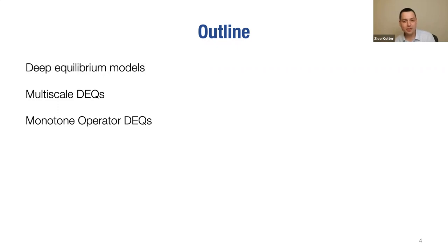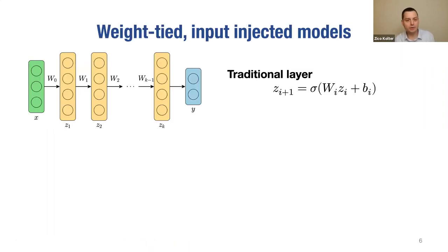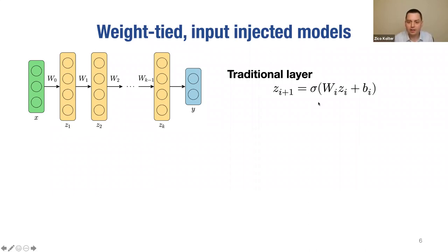To derive this deep equilibrium model, I want to start with a traditional deep network. The way we think about a traditional deep network — a simple feed-forward version — is as a multi-layer network where the activations at layer i+1, which we're calling Z_{i+1}, is a linear function applied to the last layer plus a bias term with a nonlinear operator applied to it. This is the canonical multi-layer perceptron. With linear operators like convolutions, you can get pretty far, even further if you add residual connections.